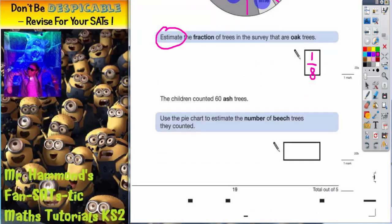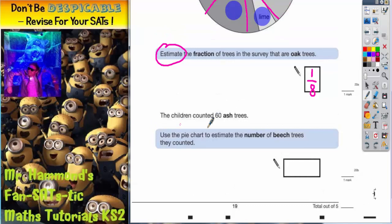Now let's scroll down and see what we've got to do next. It says children counted 60 ash trees. Use the pie chart to estimate the number of beech trees they counted. So we know at least 60 ash trees but we need to estimate the number of beech trees.